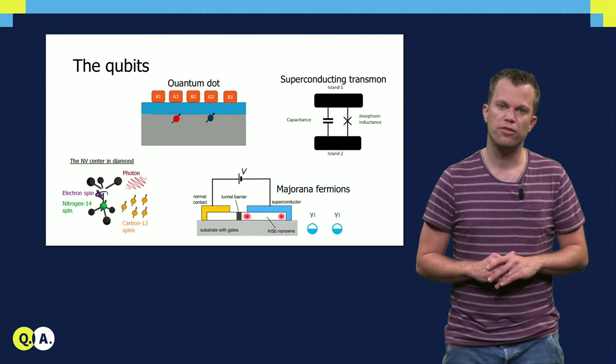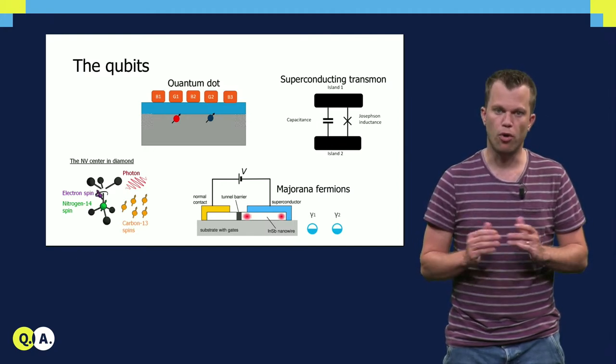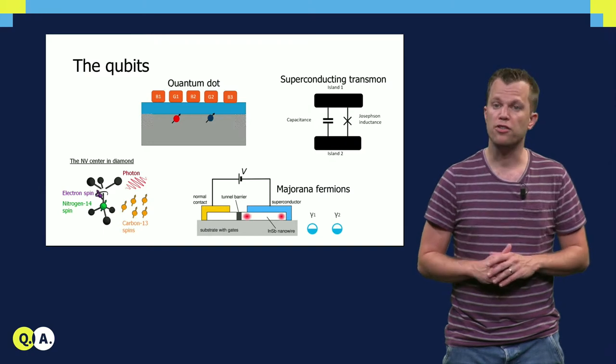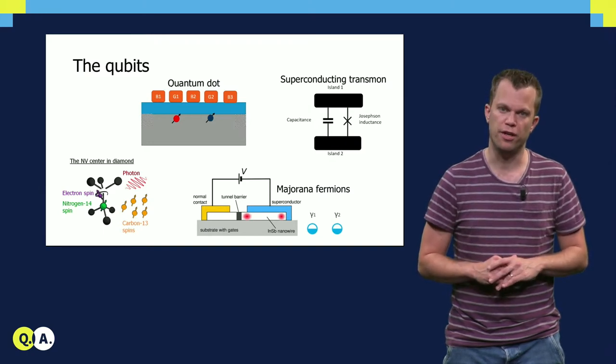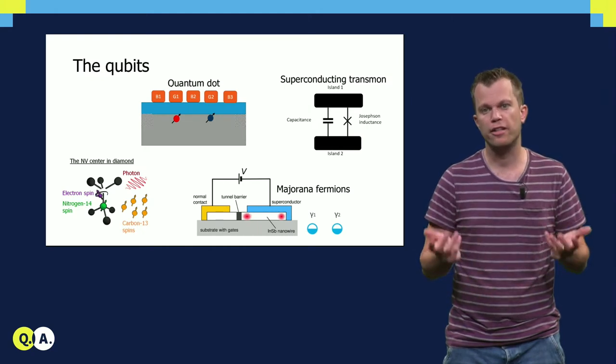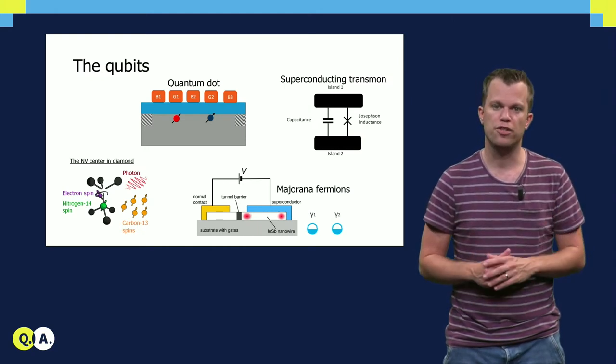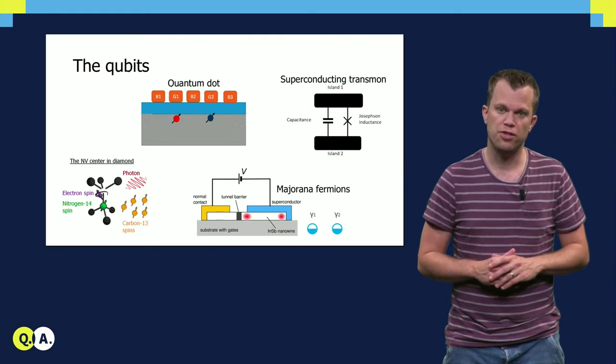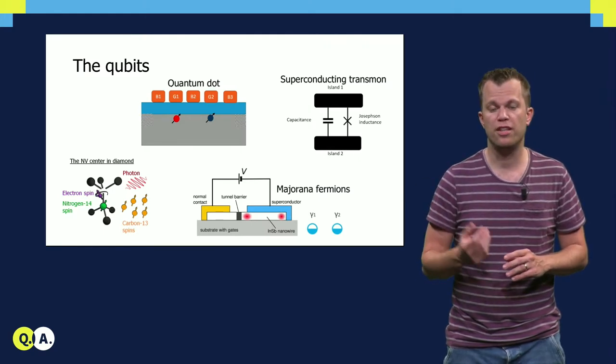Large efforts are devoted to improving the qubit environment, leading to qubits that become more and more isolated and thus to qubits with extended coherence. This is achieved by, for example, removing magnetic noise from nearby nuclear spins, or electric noise stemming from charge defects in the substrate.